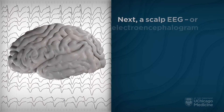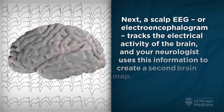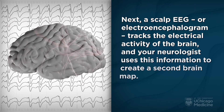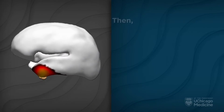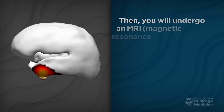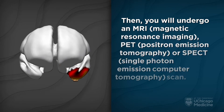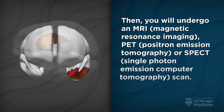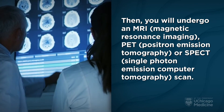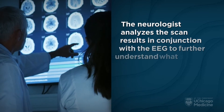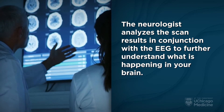Next, a scalp EEG or electroencephalogram tracks the electrical activity of the brain, and your neurologist uses this information to create a second brain map. Then you will undergo an MRI — magnetic resonance imaging — PET — positron emission tomography — or SPECT — single photon emission computer tomography — scan. The neurologist analyzes the scan results in conjunction with the EEG to further understand what is happening in your brain.